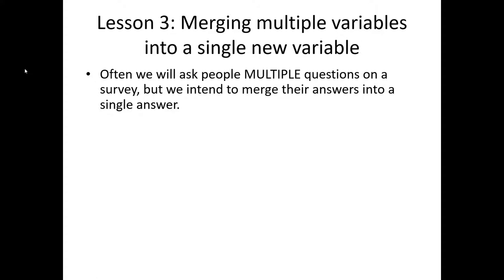In the previous example we took a single variable and made a new variable that had more coarse groupings. Other times we actually want to take multiple variables in our data set and integrate them in some way into a new composite variable.